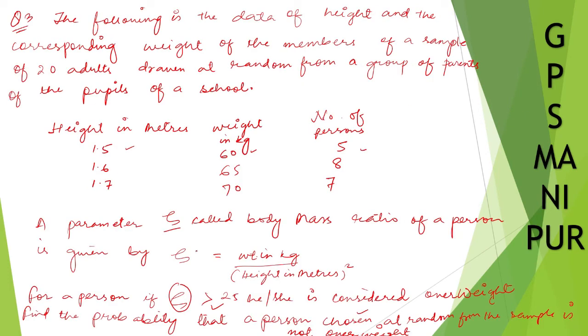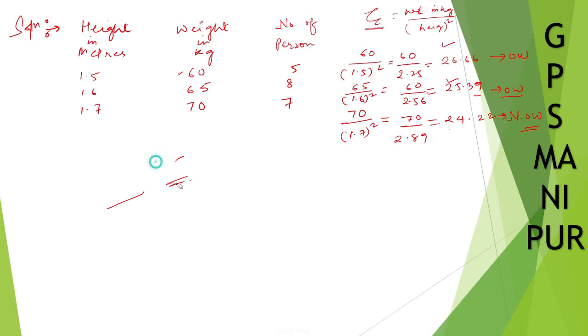So what they are asking us is, find the probability that the person chosen at random from the sample is not overweight. So we need to find probability of not overweight. Let me write down number of people who are not overweight. So here you can see these are not overweight. So this one, number of person is 7. So number of person not overweight is 7.